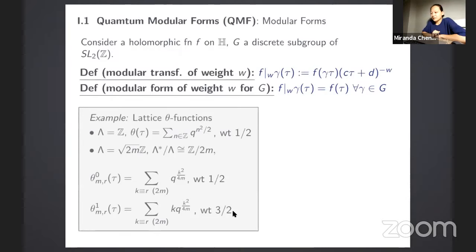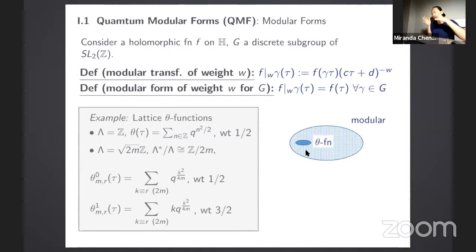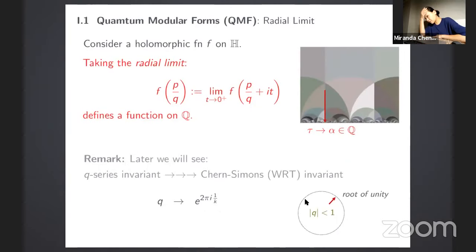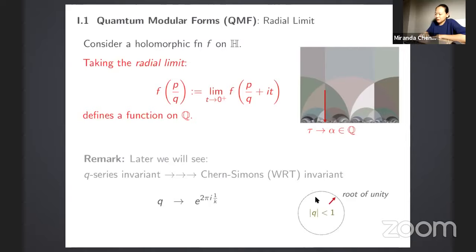Within the world of modular forms, theta functions are just a small, particularly simple part — there are many other modular forms which are not theta functions. We're often interested in the behavior of a modular form when we approach the boundary of the upper half-plane. This is the radial limit, where we approach a rational number from the upper half-plane. In the q-variable where q = e^{2πiτ}, this means approaching a root of unity from within the unit disk.